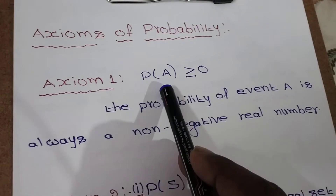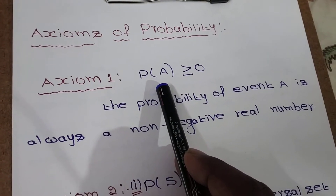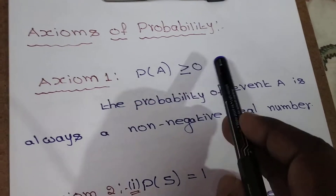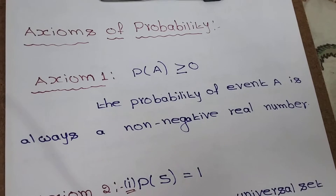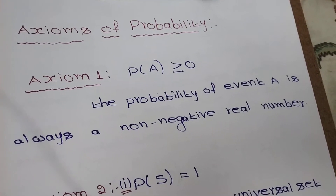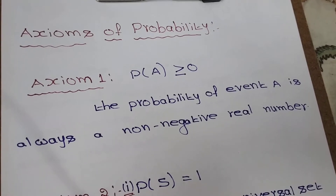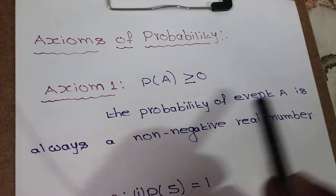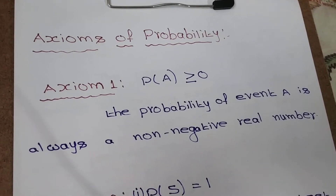Let's see the first axiom. Probability of any event A, P of A, is greater than or equal to 0, which means the probability of any event is a non-negative number. So the probability of event A is always a non-negative real number.